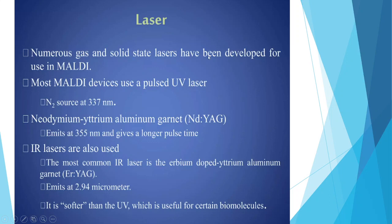Numerous gas and solid-state lasers have been developed for use in MALDI. Most MALDI devices use a pulsed UV laser nitrogen source at 337 nanometers. Neodymium-yttrium aluminum garnet (Nd:YAG) emits at 355 nanometers and gives a longer pulse time. IR lasers are also used; the most common IR laser is the erbium-doped yttrium aluminum garnet (Er:YAG), which emits at 2.94 micrometers. It is softer than UV lasers, which is useful for certain biomolecules.